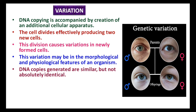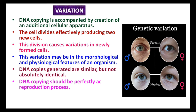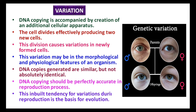As you can see in the figure, the eyes of the parents do not match with the eyes of the offspring. DNA copying should be perfectly accurate in the reproduction process. However, variations among individuals will occur if DNA copying is not perfectly accurate. This inbuilt tendency for variation during reproduction is the basis for evolution.